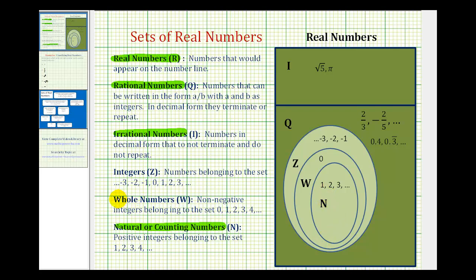Next, the whole numbers include all of the natural numbers and the number zero. Looking at the Venn diagram again, capital W represents whole numbers, which include zero as well as all of the natural numbers.